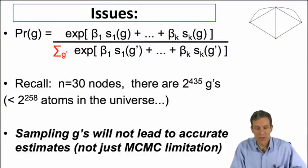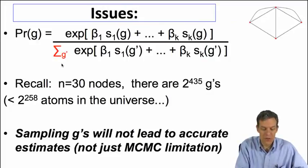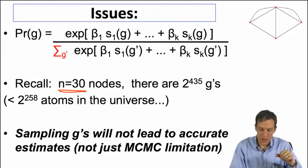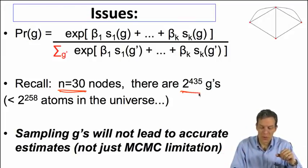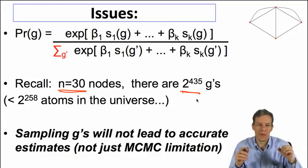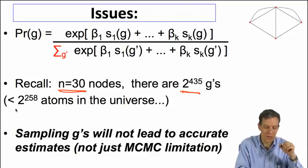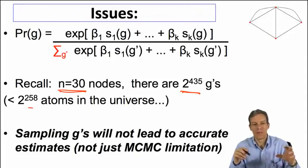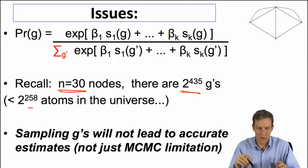The challenge here is the fact that even with just 30 nodes, so if we bump our marriage example up to say 30 families instead of 15, 16, we're going to end up with, remember, 2 to the 435th possible networks. And again, there were less than 2 to the 58 atoms in the universe. There's no possible way that we're going to be able to sum over this.